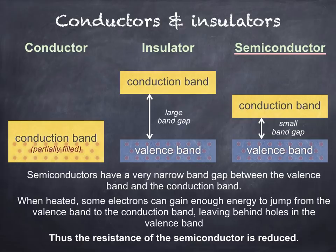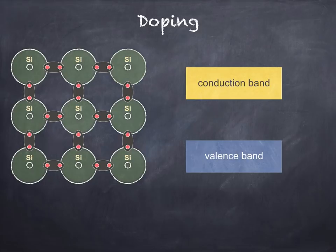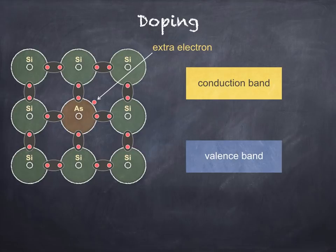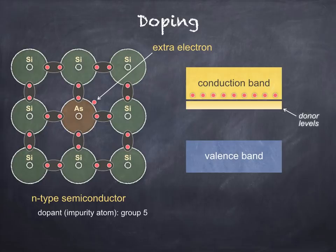Next on the agenda is doping. Here on the left we see the bonding model of an intrinsic semiconductor — silicon again. With the addition of impurity atoms during the manufacture of the semiconductor, we can reduce its resistance. This is done in one of two ways. By doping with a group five impurity atom, such as arsenic as shown here, we end up with an extra electron. The energy level of this fifth electron is within the band gap, just below the conduction band. The energy levels associated with the extra electrons are known as donor levels. Even at room temperature, most of these electrons will gain enough energy to jump into the conduction band, thus reducing the resistance of the semiconductor. We call this an n-type semiconductor, since the majority of conduction is due to the negative electrons within the conduction band.